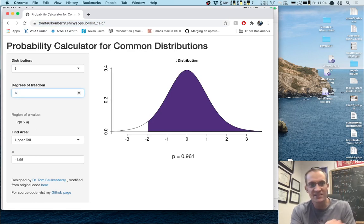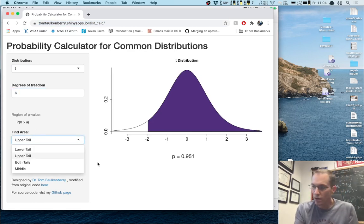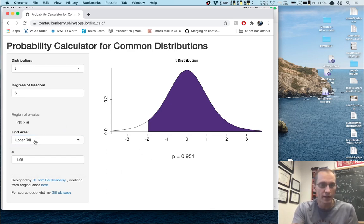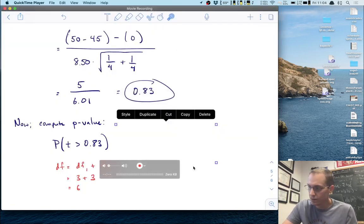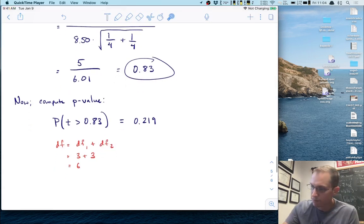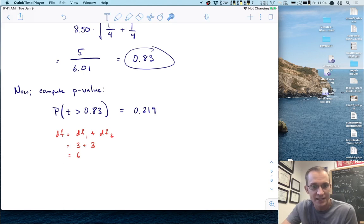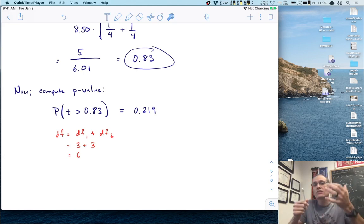We specify the degrees of freedom to be six. We want the probability that t is bigger than 0.83, so we want an upper tail benchmarked at 0.83. The probability is 0.219. This is where we make a decision about our hypotheses. If that number was small, the data were rare under the null and we would reject it. But here, roughly 22 percent is not rare at all - it's actually quite plausible.